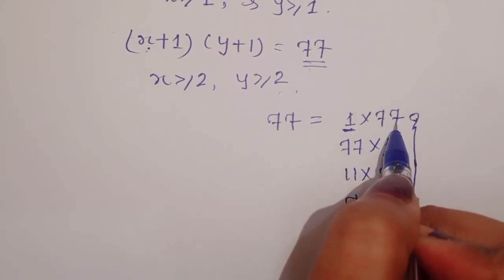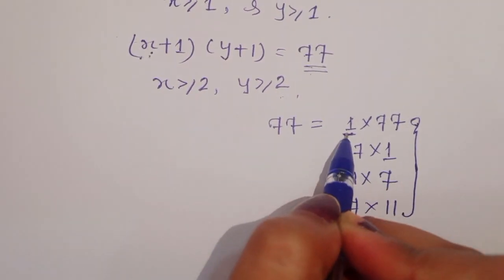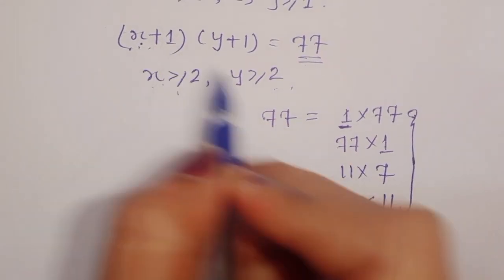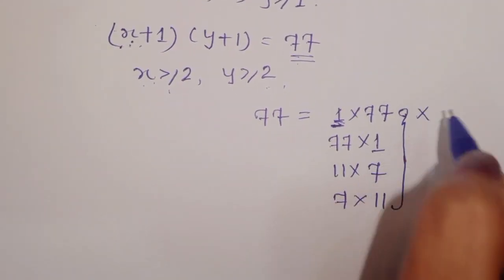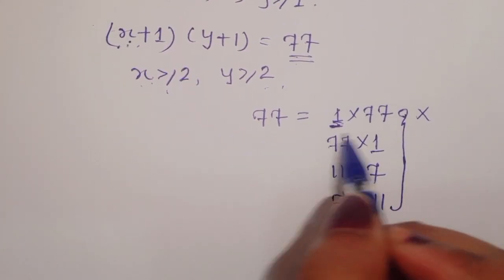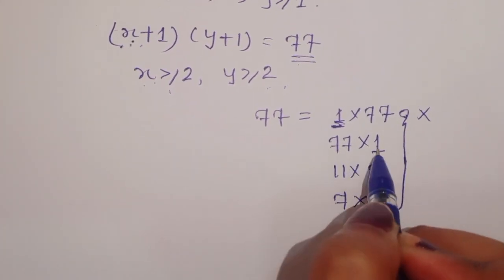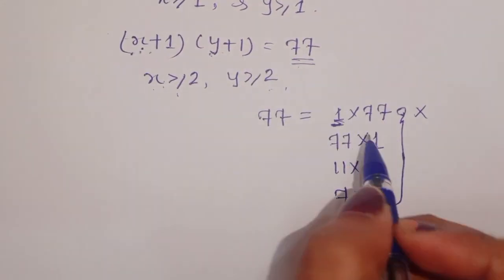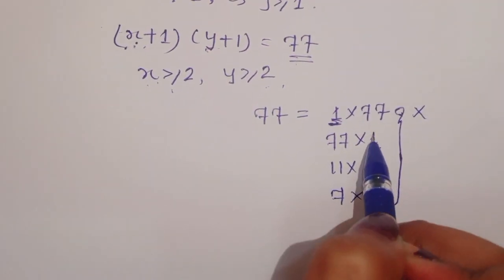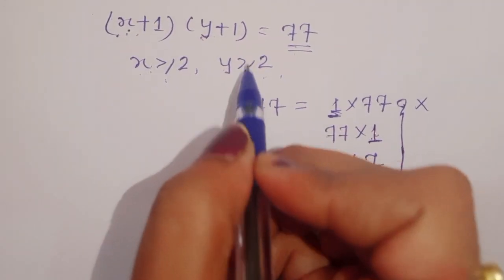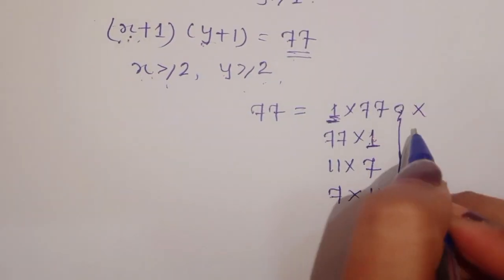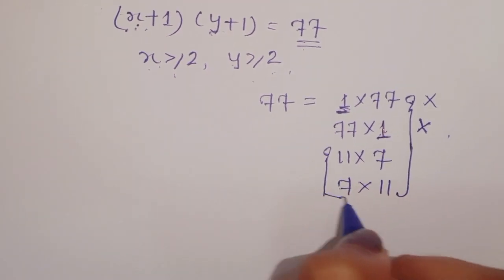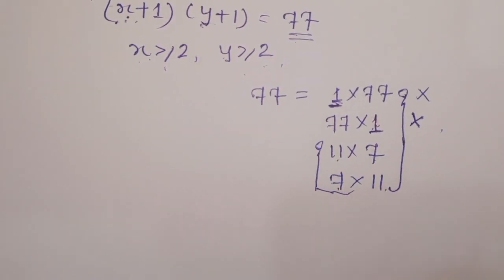If we take 1 times 77, the value of x plus 1 equals 1, meaning x equals 0. But the condition requires x is greater than or equal to 2, so this is not possible. In the next case, 77 times 1, y plus 1 equals 1 so y equals 0, which also violates y greater than or equal to 2. So both these cases are not valid.